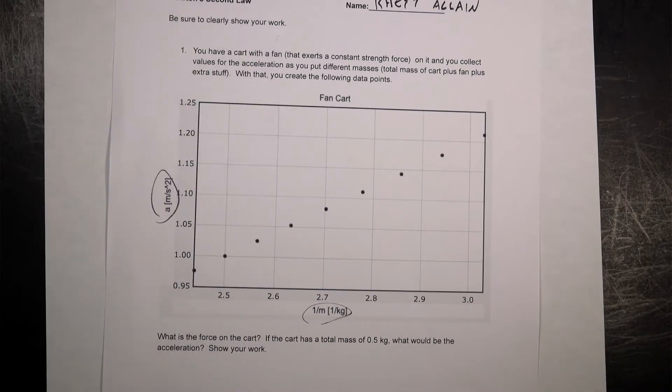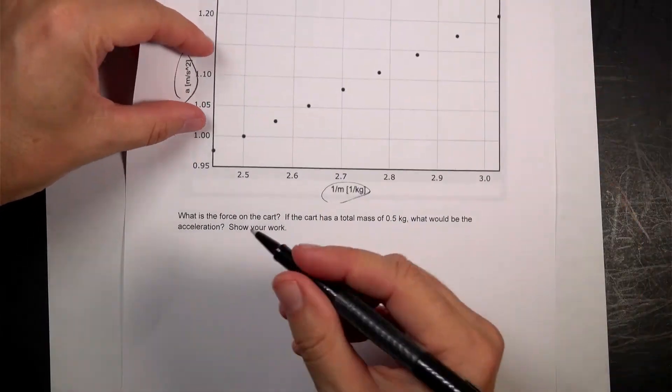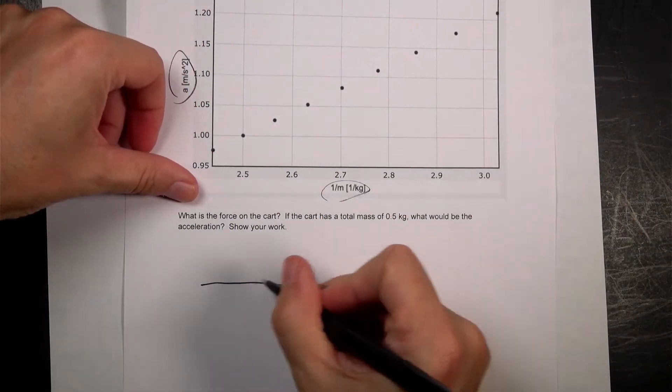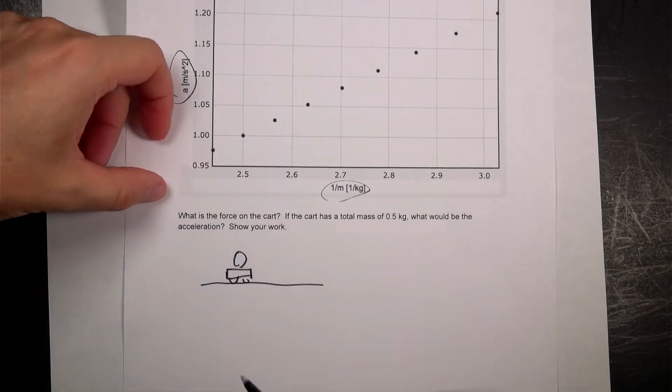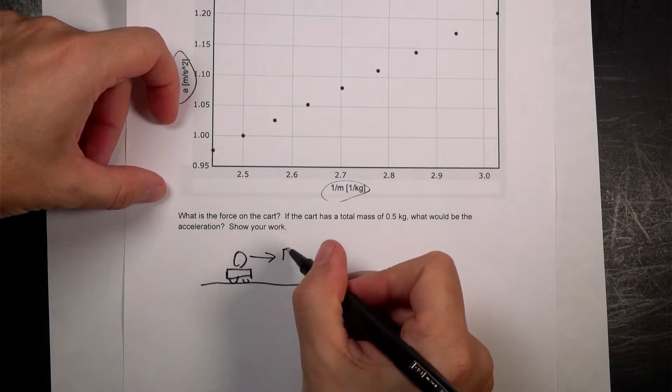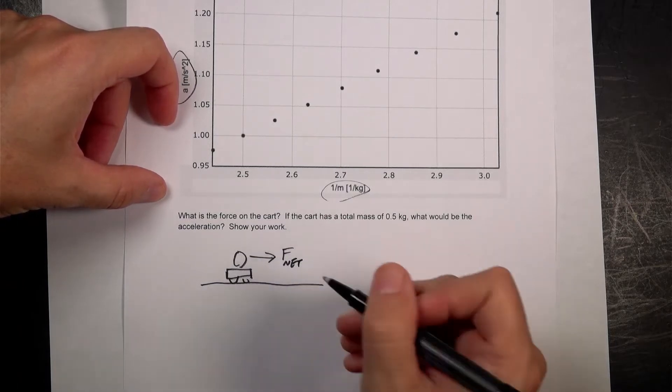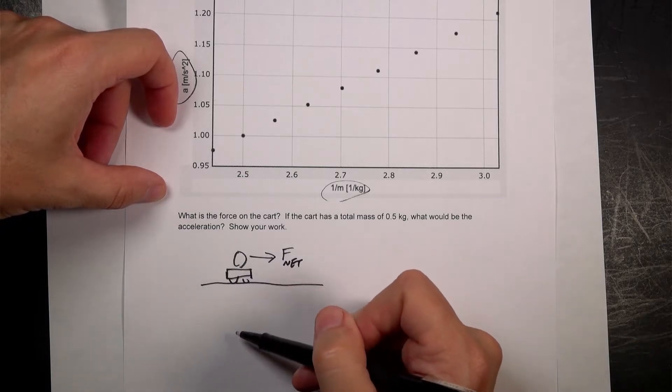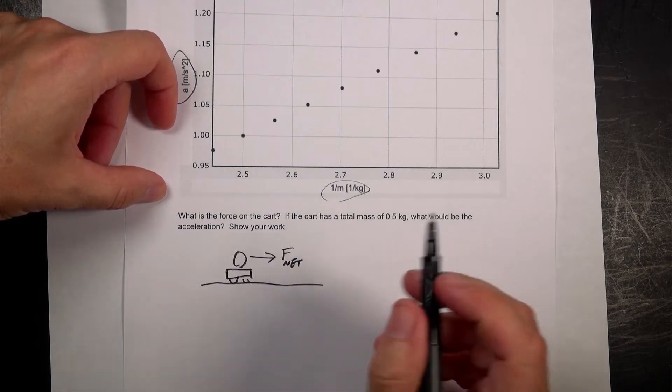So what force is on the cart? Let's do this. Let's draw a picture first. So imagine that I have my cart like this. And then here's my fan. And the fan exerts some constant force. I'm going to just write it as F net because that's the net force.